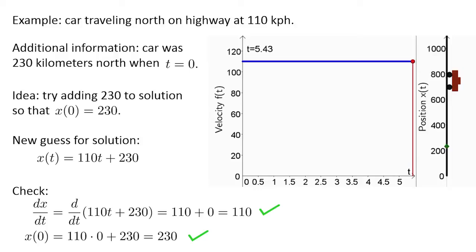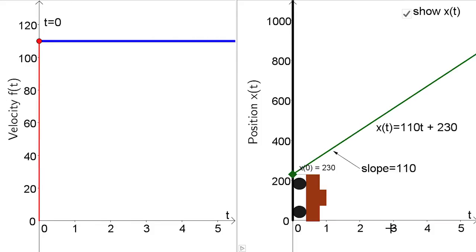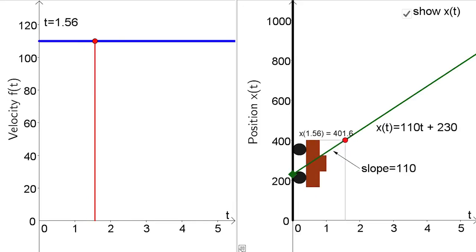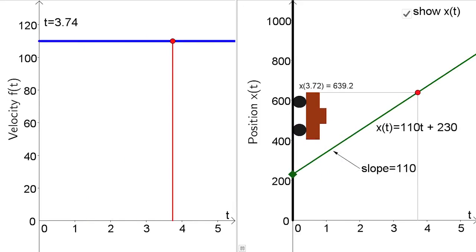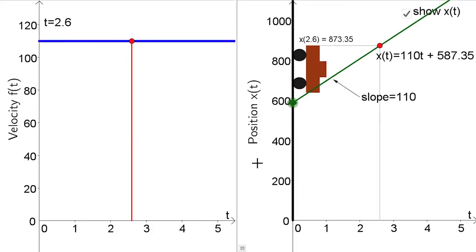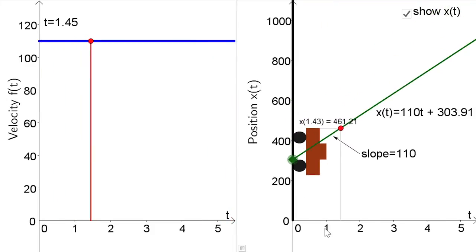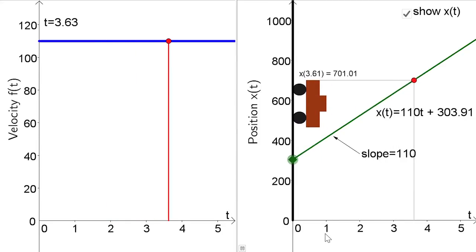In fact, since the derivative of any number is 0, we could actually add any number to the function x(t) equals 110t, and it would still satisfy the differential equation. Let's first see this graphically by looking closer at the applet used to make the animations. Right now, I have the solution set to start at position 230 as before. Let's take a look at the graph of x(t). As you can see, it has a slope of 110 since its derivative is 110. By turning on the animation, we can see the relationship between the car's position at each time and the graph of x(t). By dragging the green diamond, I can change the starting position of the car. This modification just raises the entire graph of the function x(t), i.e., adds a constant to x(t). No matter what this initial value is, the slope of the graph is 110, and the car is moving forward at 110 kilometers per hour.